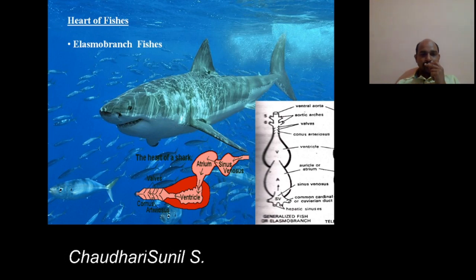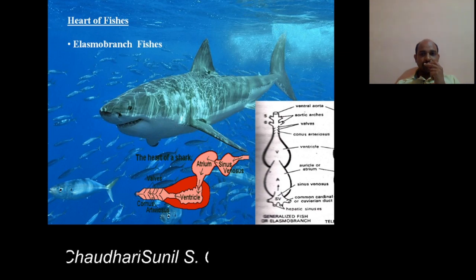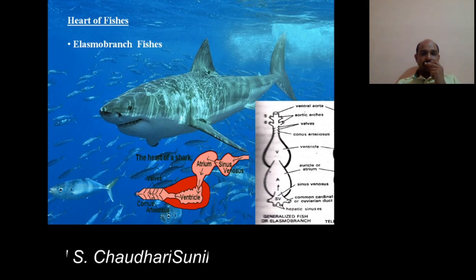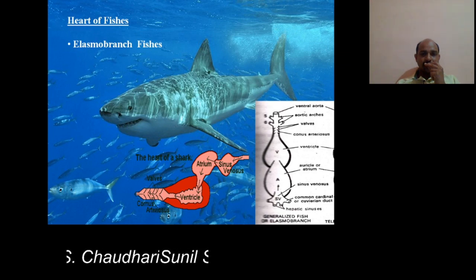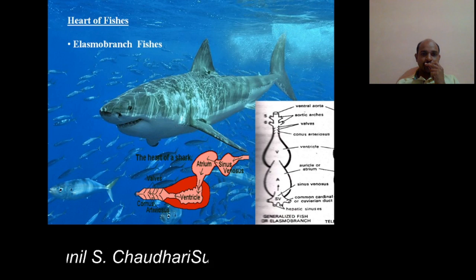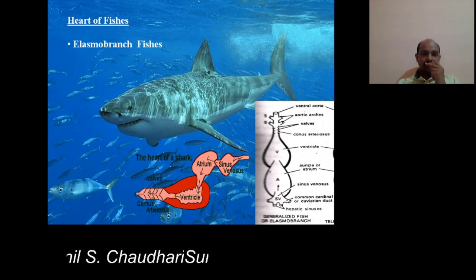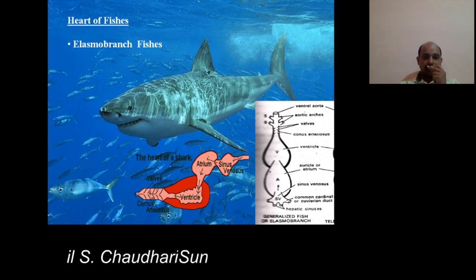The heart is not actually the four-chamber type; they are having compartments. They are elongated in shape. The first is the sinus venosus, in which the venous blood or impure blood comes first. Then the atrium, ventricle, and the next is the conus arteriosus.